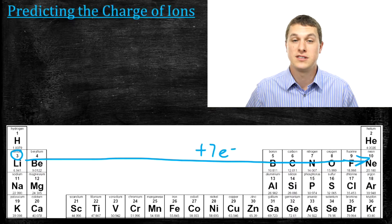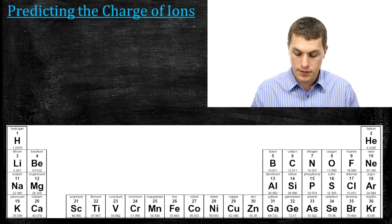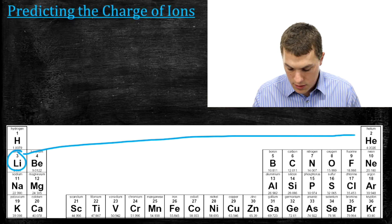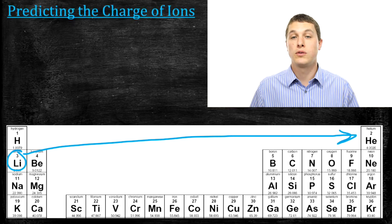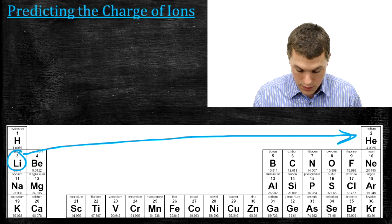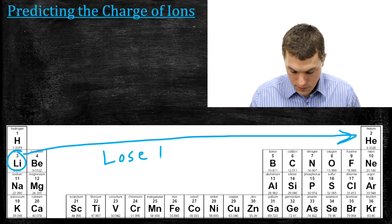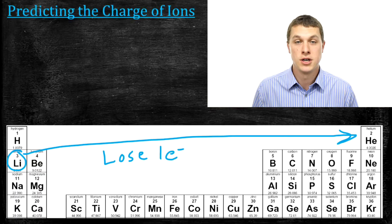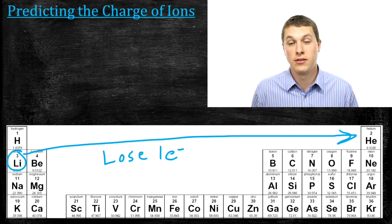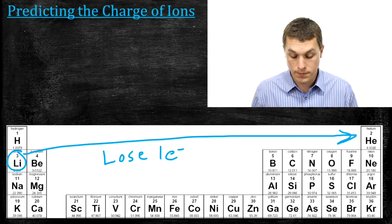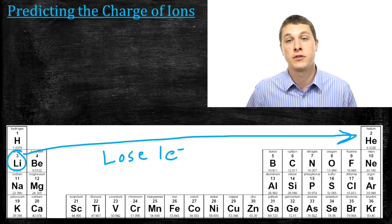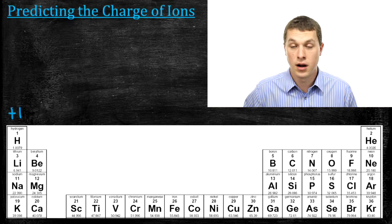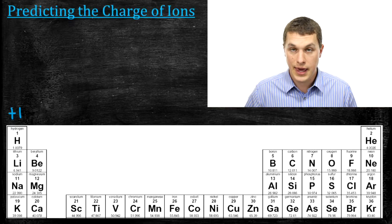Instead, lithium actually loses one electron to go to helium. So lithium looks like helium in terms of the number of electrons — it goes from having three electrons to two electrons. When we lose an electron, that gets rid of negative charge, making lithium charged with a positive one. So that first column with hydrogen, lithium, sodium, and potassium tends to become plus one. That whole first column will tend to lose an electron to look like a noble gas on the other side of the periodic table and become positively charged.